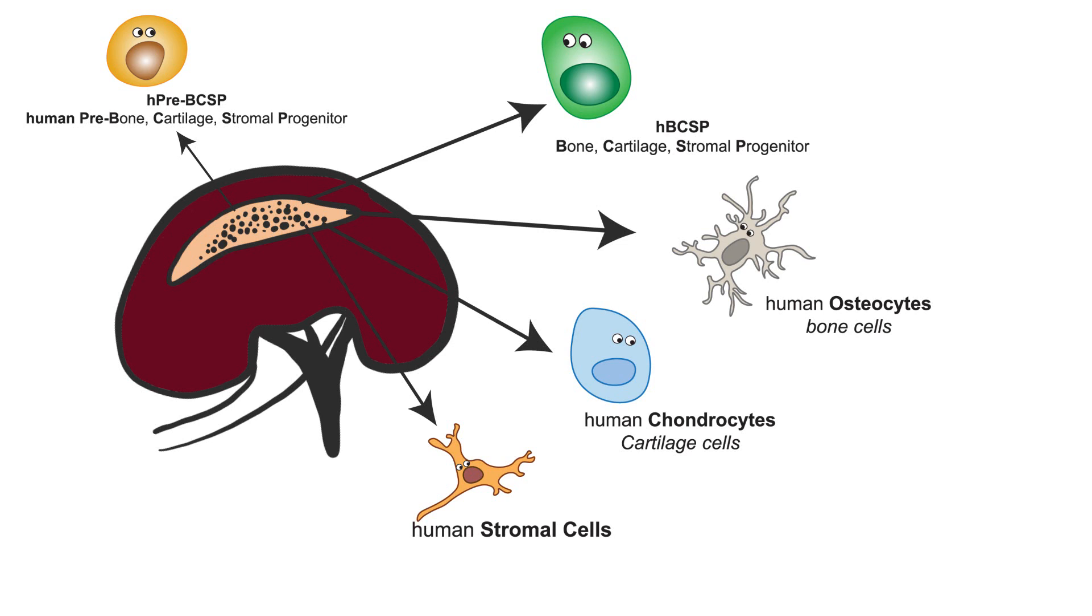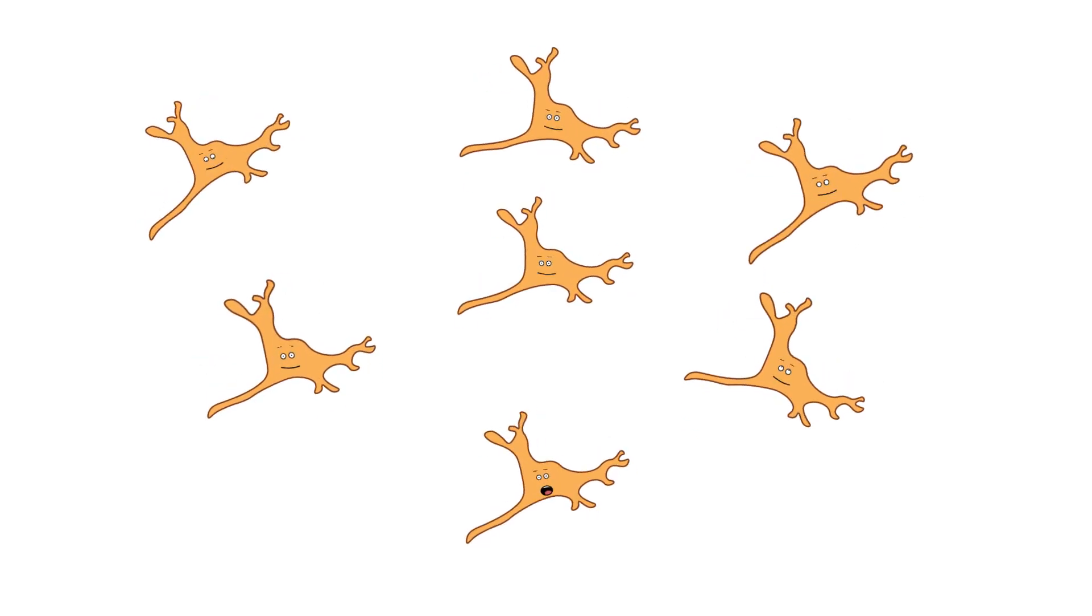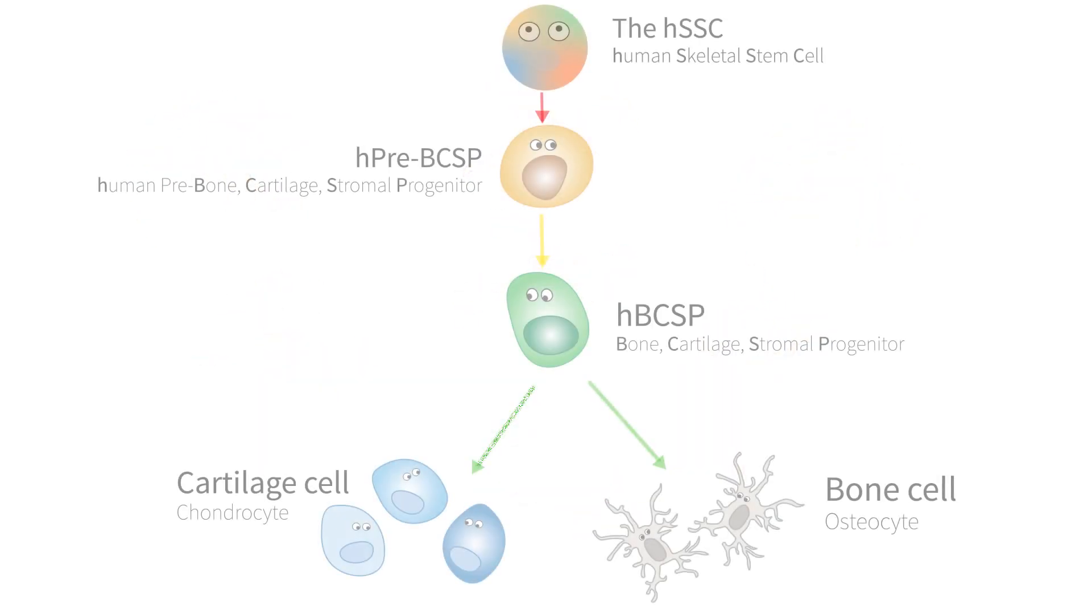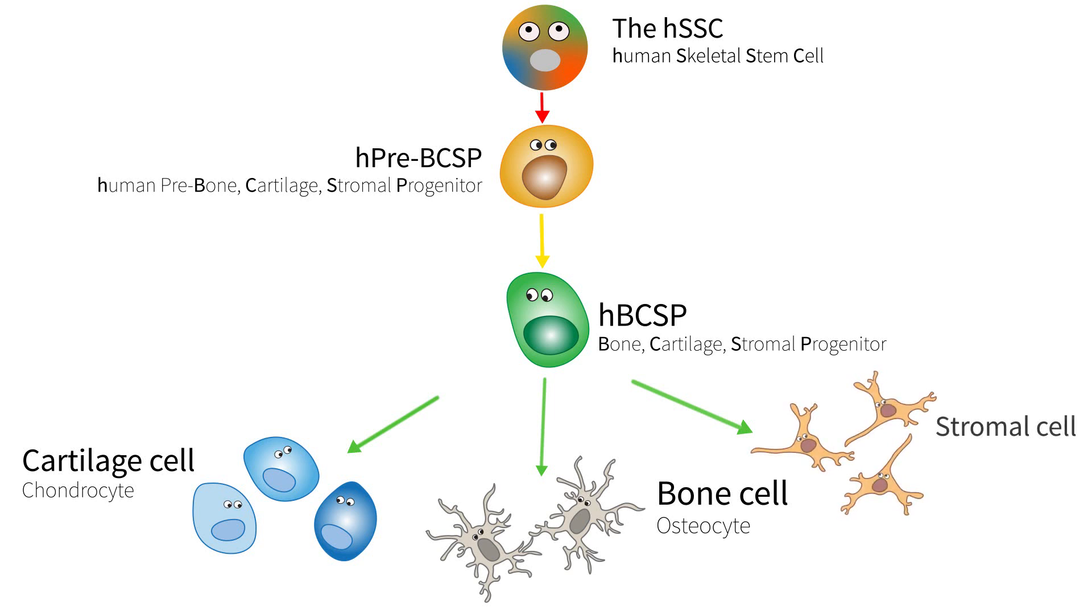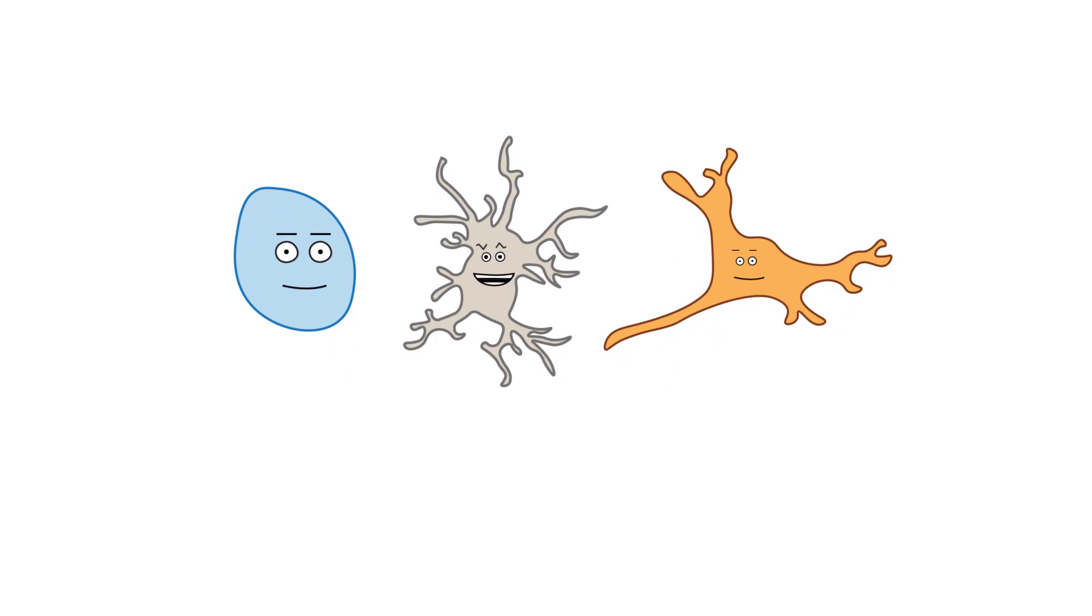There is another interesting discovery. You know our friends who always hang out with those blood cells? Yes, the stromal cells. Well, look at our ancestry tree. No way, the BCSP produces stromal cells too! Imagine that.